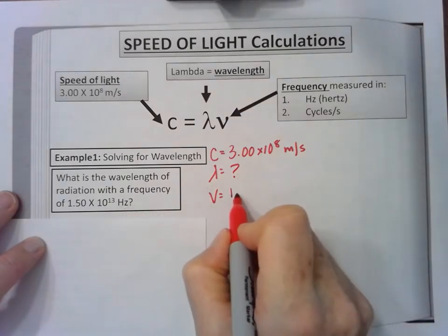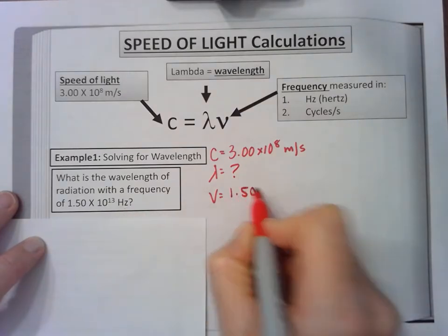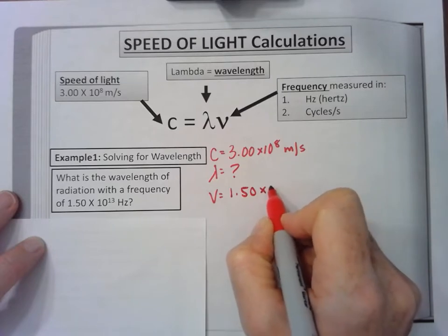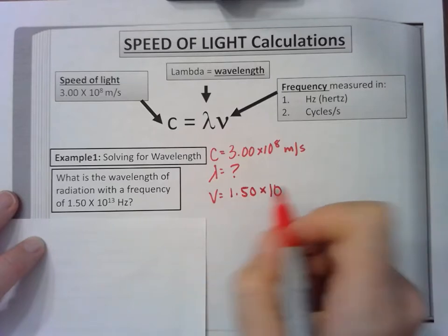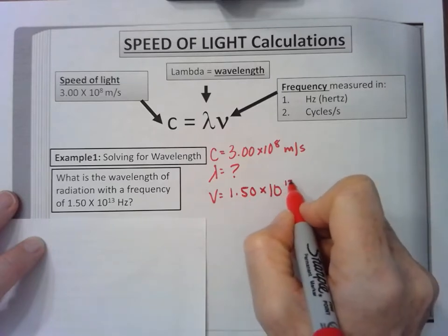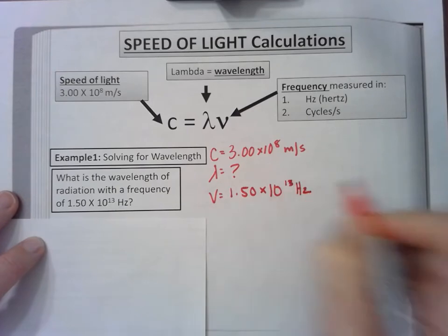Which is the V or the nu: 1.50 times 10 to the 13th. It says Hertz. We can't use that to solve, so this is how it's given, but I can't use that.